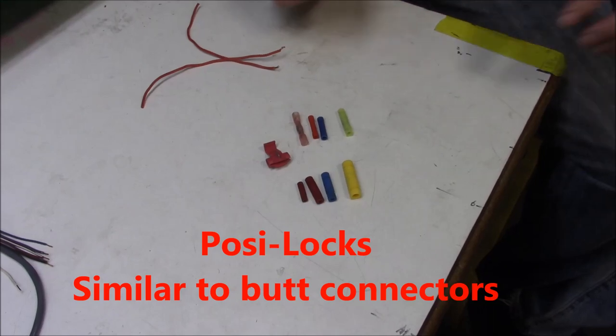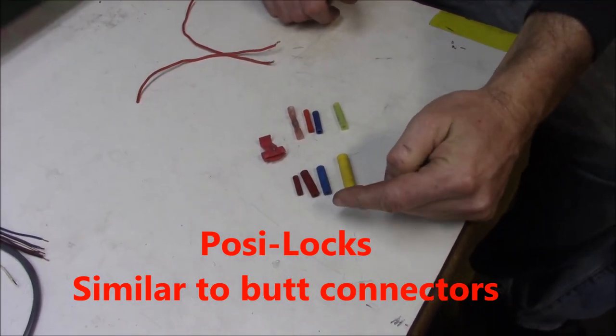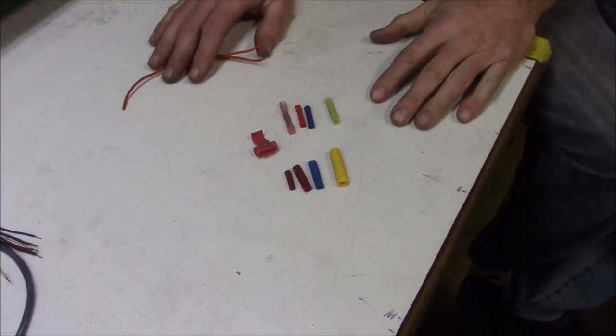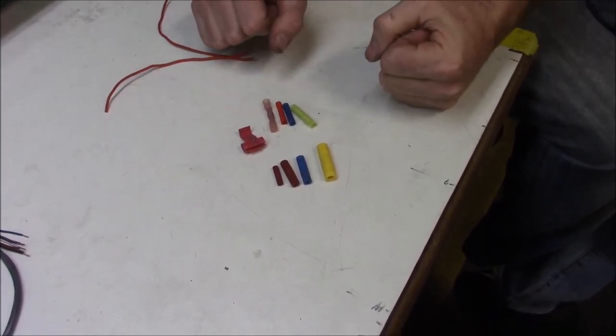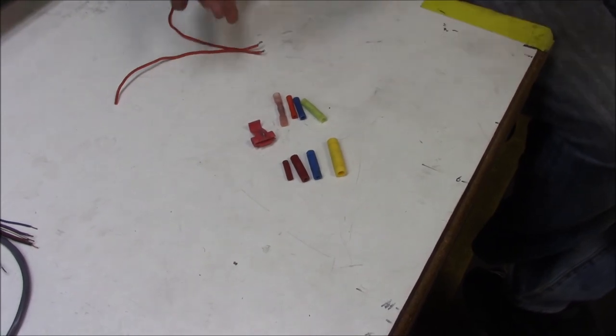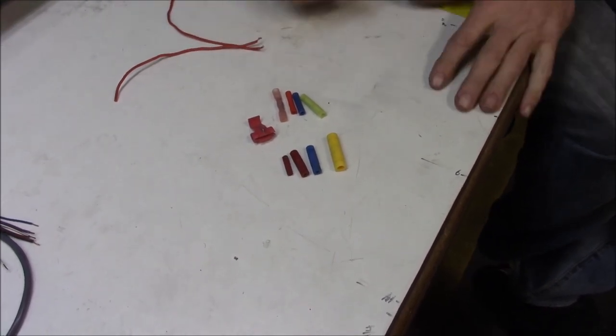These are called Posi Locks. Now I always show you the comparison - what was the old way to do it. The old way was butt connectors, where you put the wire in, you crimped it, or you could put two wires together and solder it. We don't want to solder.